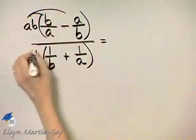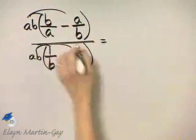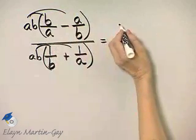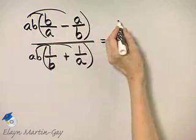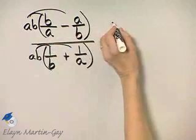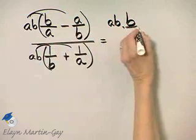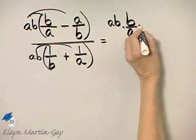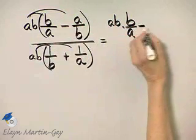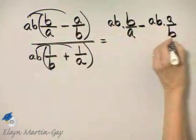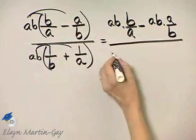Now, when I use the distributive property, I'm going to show that for each one of these smaller rational expressions within this complex fraction, what I have is AB times B over A minus AB times A over B all over,